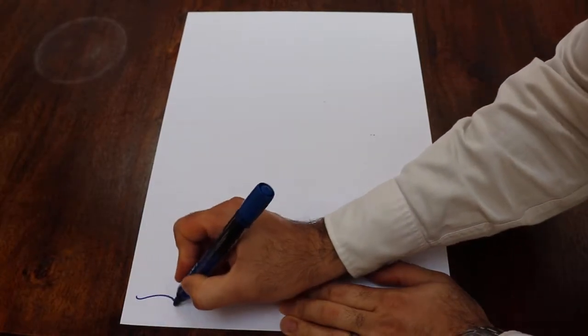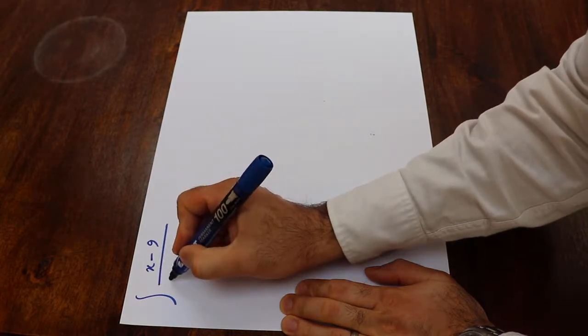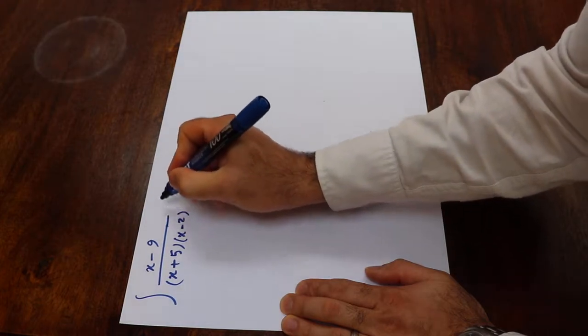Hello, today I'm going to show you how to calculate the integral of x minus 9 divided by x plus 5 times x minus 2 dx.